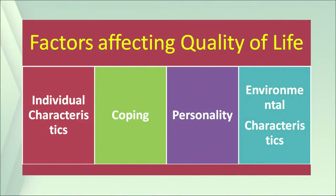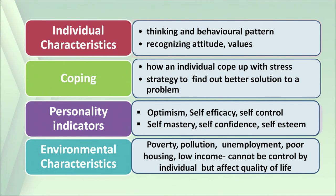Now we will talk about the factors affecting quality of life. There are four factors: individual characteristics, coping, personality, and environmental characteristics. Individual characteristics relate to the thinking and behavioral pattern of the individual and how it recognizes attitude and values. The coping factor refers to how the individual copes with stress and the strategy to find a better solution to a problem. Personality indicators include optimism, self-efficacy, self-control, self-mastery, self-confidence, esteem, and so on.